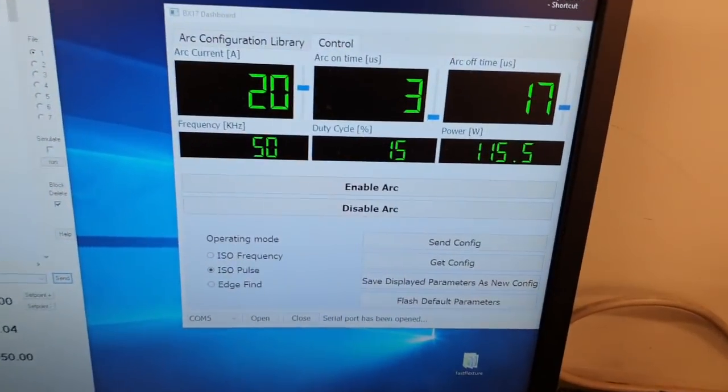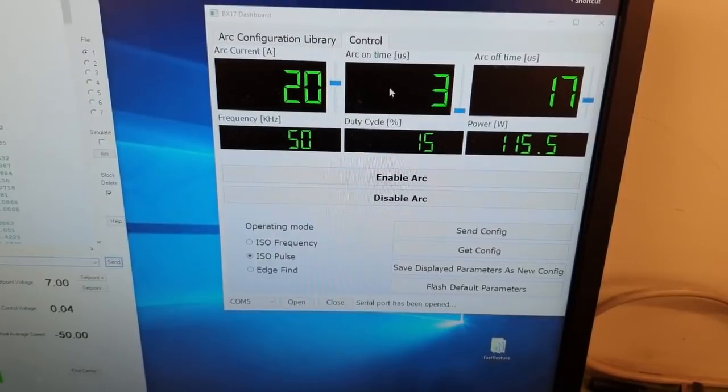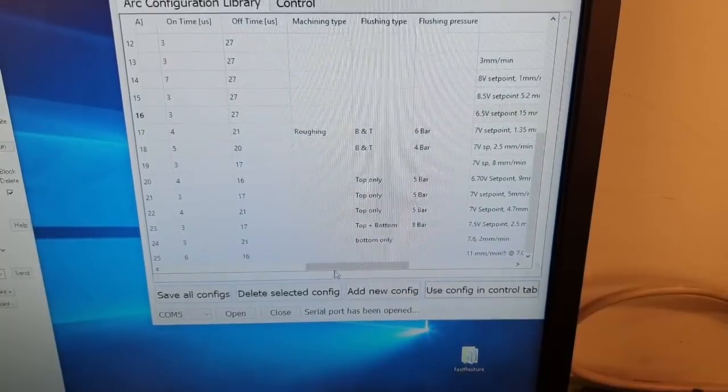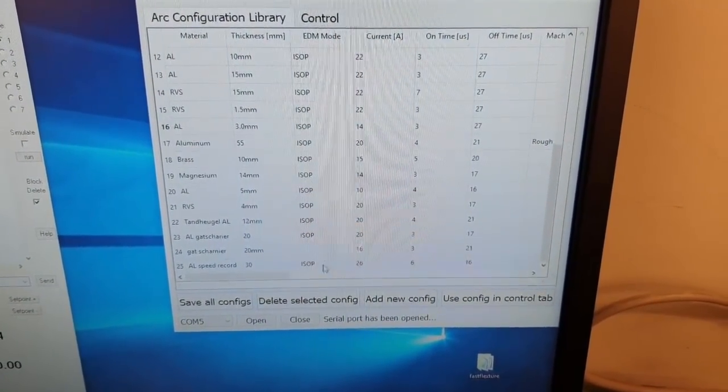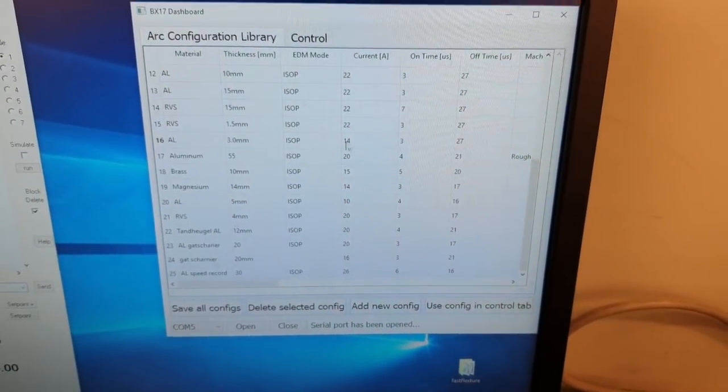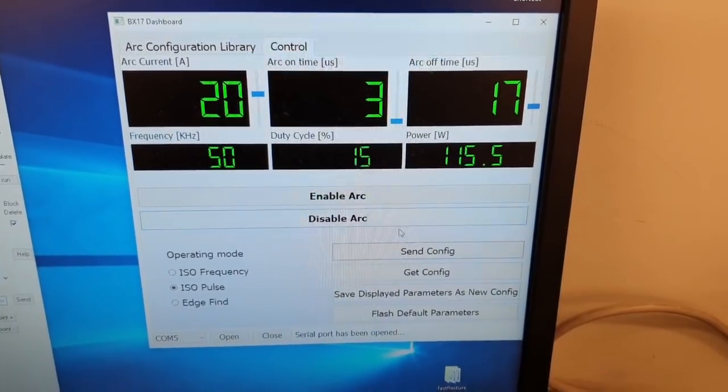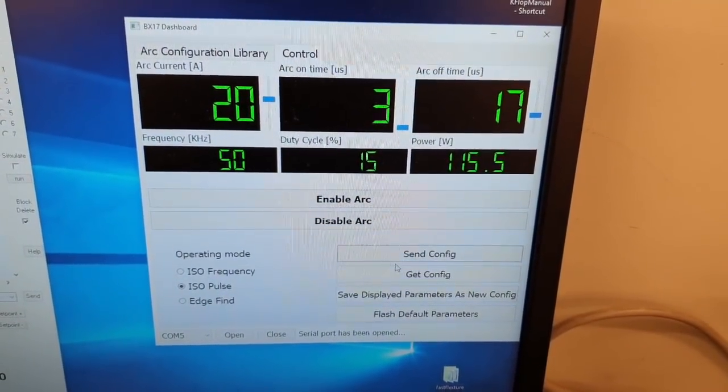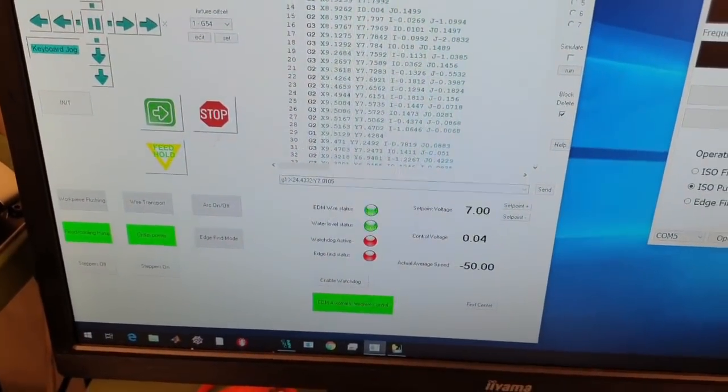Here's the user interface of the arc generator. Pretty straightforward. I have my arc configuration library here. So here are a lot of different parameters of things that I have cut. So I can store my values here, and then I can send them over to the control screen, send them to the arc generator, configure it for cutting. And yeah, basically that's it.